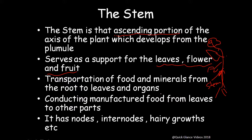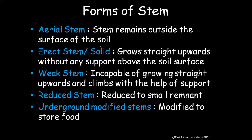There are different forms of stems. First is the aerial stem, which remains outside the soil surface. The erect stem is solid and grows straight upwards without any support. The weak stem is incapable of growing straight upwards and climbs with the help of support. The reduced stem is reduced to small remnants.